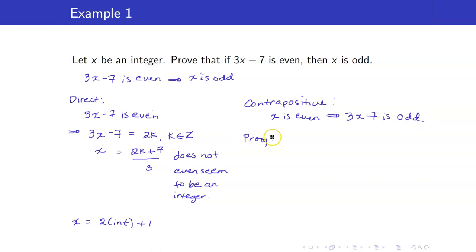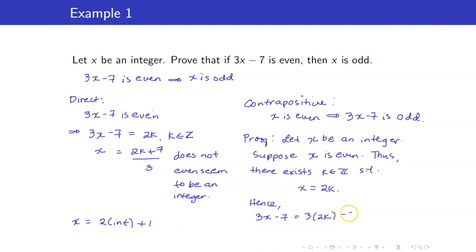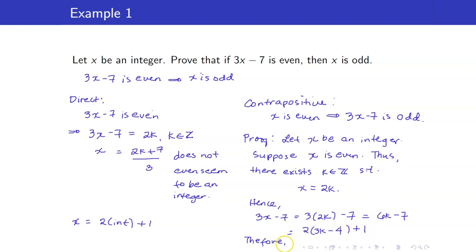For our proof, we start with our assumption that X is an integer, and then suppose X is even. Thus, there exists an integer K such that X is equal to 2K. Hence, 3X minus 7 is equal to 3 times 2K minus 7, which is 6K minus 7. We write this as 6K minus 8 plus 1, so that we have 2 times an integer plus 1. This will be 2 times (3K minus 4) plus 1. Therefore, 3X minus 7 is odd.